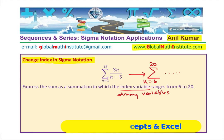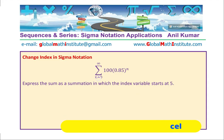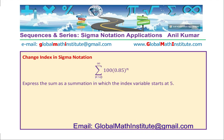Well, the second question here is to change the index when the upper bound is infinitely large. So, we have this particular summation where n is from 0 to infinity, 100 into 0.85 to the power of n. The question here is express the sum as summation in which index variable starts at 5. So, we want the index variable to start at 5.